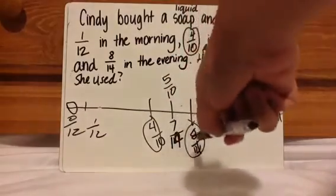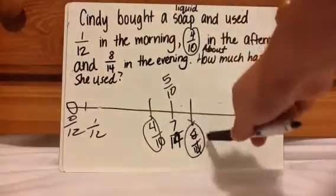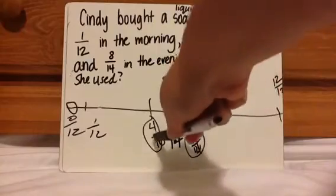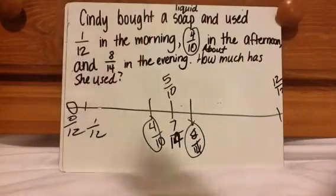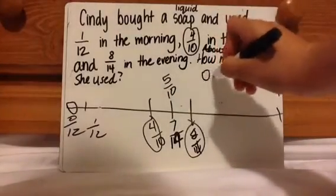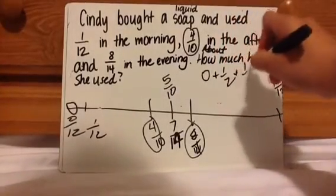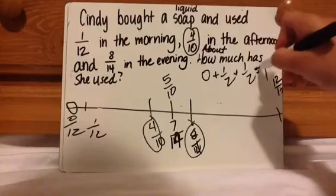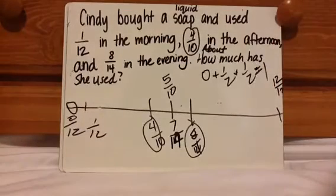So we have half, half, and then basically almost nothing. So 0 plus half plus half equals 1 whole. You could say she has almost used the entire bottle.